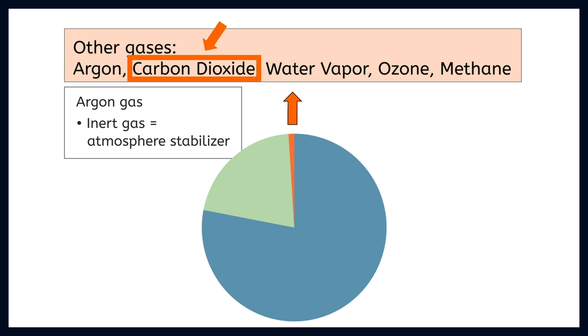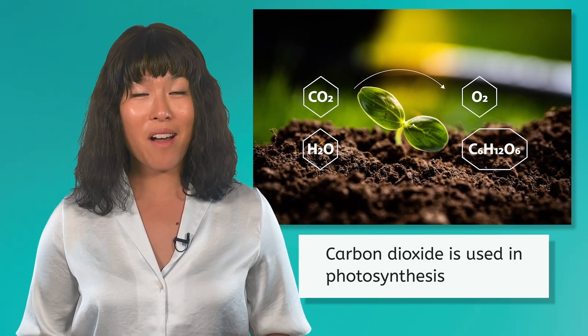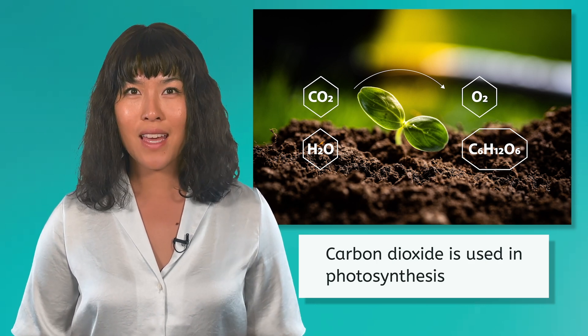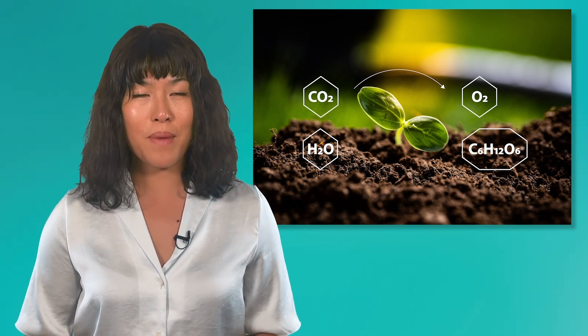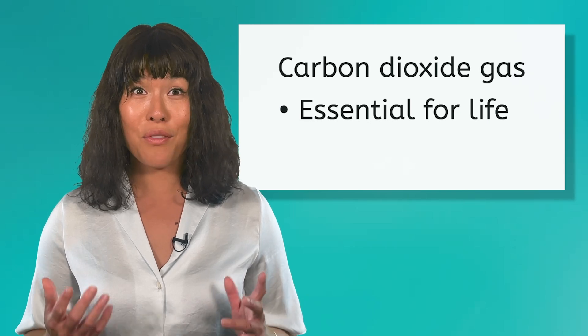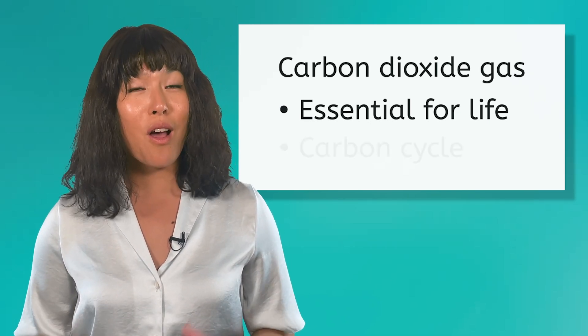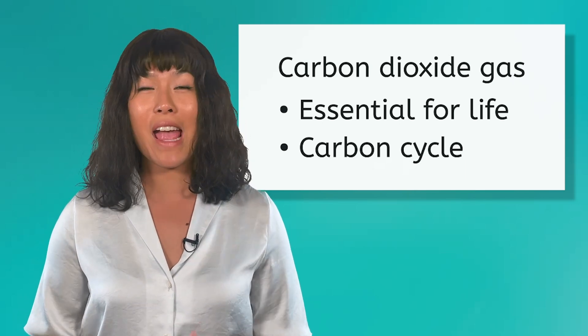We also have carbon dioxide gas in that remaining 1%. Plants use this carbon dioxide to make oxygen in the process of photosynthesis, and we know how important oxygen is. Carbon is also essential in making lots of important biological molecules, like sugars and proteins. Carbon is one of the main building blocks of life. This nutrient also has its own special cycle, where it changes forms and moves through the atmosphere and biosphere.